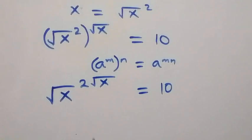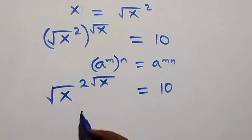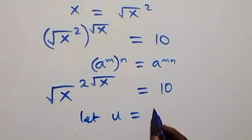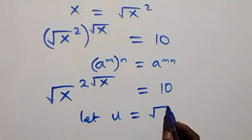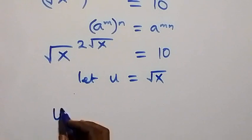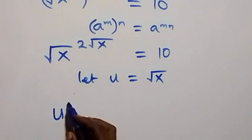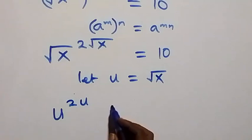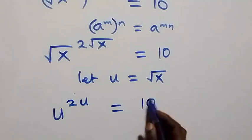Next step: let's use a letter to represent root x. So let u equal root x. Then what we have now, written in terms of u, is u raised to the power 2u equals 10.